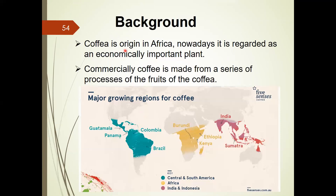Coffee is originally from Africa. Nowadays it's regarded as an economically important plant. The major growing regions of coffee are South America, Africa, and Asia. In Asia, Indonesia, Vietnam, and India are major growing countries.